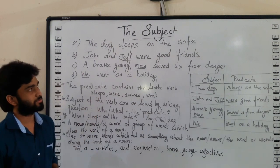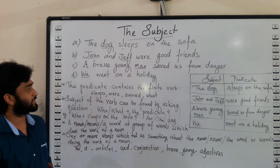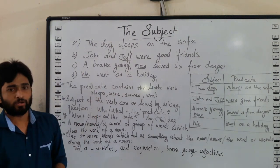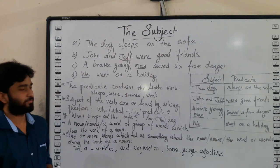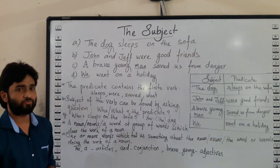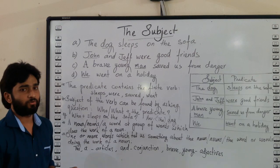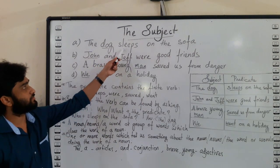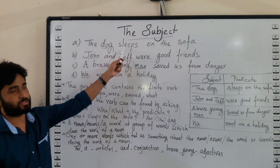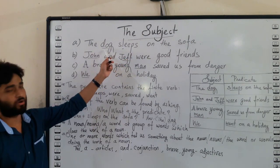From these sentences, we can first find the verb. What is the verb? The action verb. The action verb here is 'sleeps' — the action being done by the dog. The dog sleeps on the sofa, so the action verb is 'sleeps'.